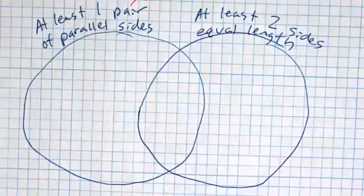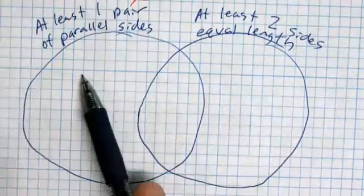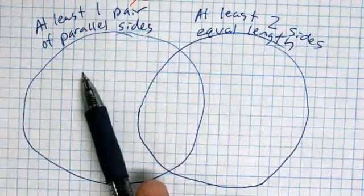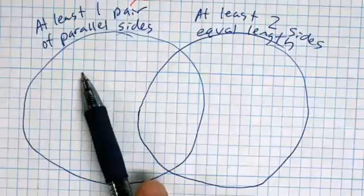Can somebody find me one shape from that Shapes Toolkit in the packet that would go in this portion of the Venn diagram? The shape needs to have at least one pair of parallel sides, but it doesn't have any sides of equal length. What are you seeing that could go in there?